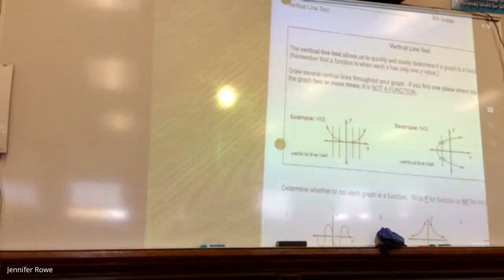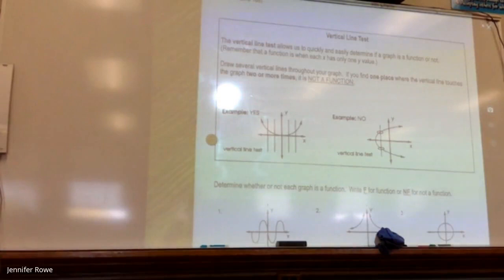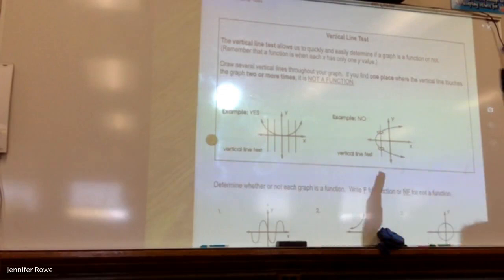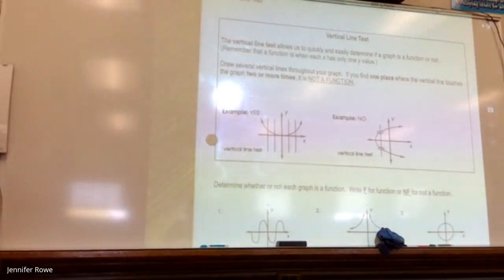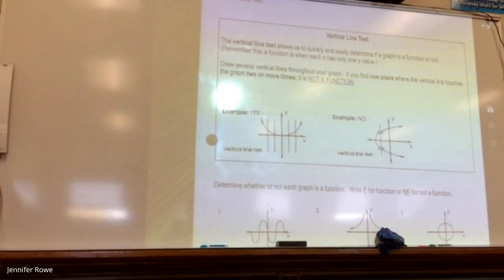The direction at the top of the box says 'the vertical line test.' Before we go on — show me what you remember a vertical line looks like. Up and down — straight up and down is a vertical line. There is no such thing as a horizontal line test. The vertical line test allows us to quickly and easily determine if a graph is a function or not. Remember, a function is when each x has exactly one y value. Draw several vertical lines throughout your graph. If you can find one place where a vertical line touches the graph two or more times, then it is not a function.